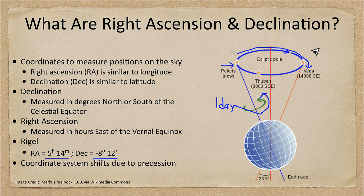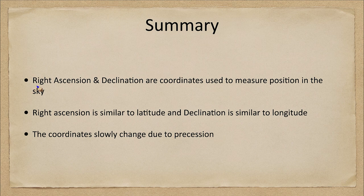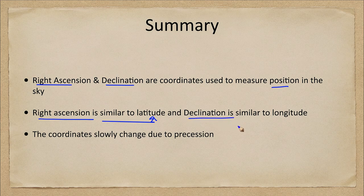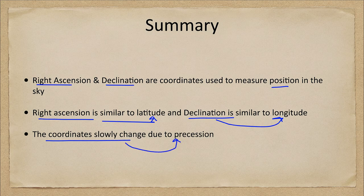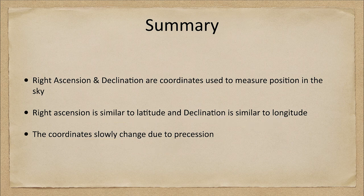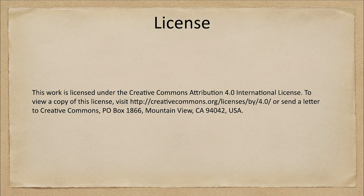To summarize: right ascension and declination are coordinates used to measure position in the sky. Right ascension is similar to longitude and declination is similar to latitude, and we looked at how these coordinates slowly change due to the precession of earth's axis. That concludes this lecture on right ascension and declination. We'll be back next week for another special topic in astronomy — have a great day everyone and I will see you in class.